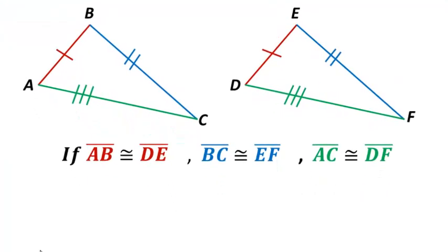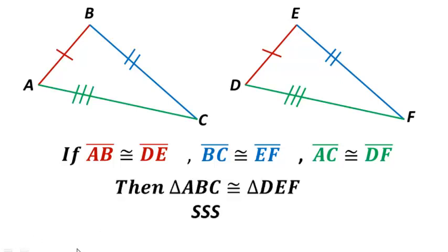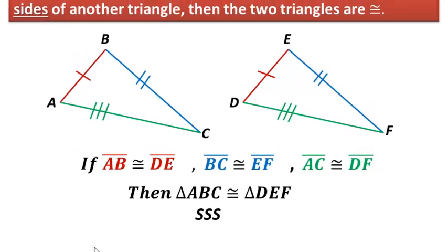We don't need to show that any of the corresponding angles are congruent — this is enough. We have three sets of corresponding sides that are congruent. We would then conclude that triangle ABC is congruent to triangle DEF by the side-side-side postulate.